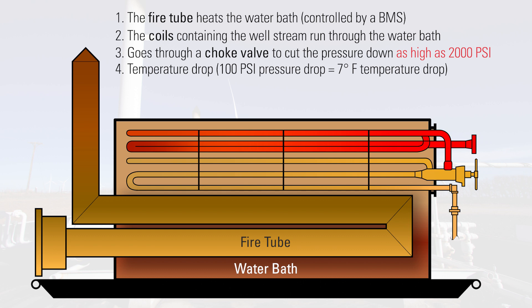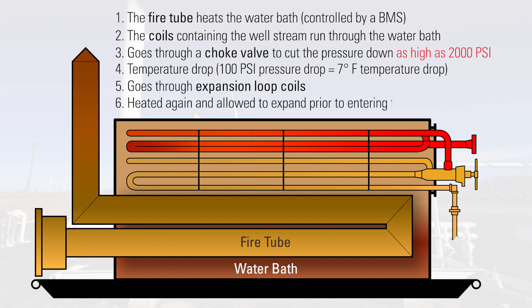After the choke, it goes through the second set of coils, which are also referred to as the expansion loop coils. The well stream is then heated again to allow it to expand prior to entering the separator for processing.